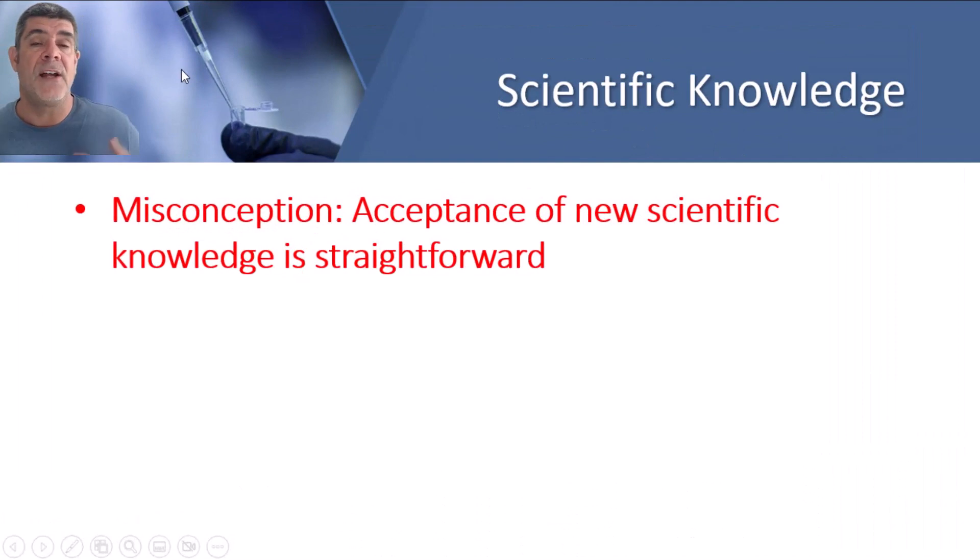A third area where we might talk about scientific misconceptions is the area of scientific knowledge. And a couple of these hopefully will suffice to get you an idea of some of these misconceptions. Acceptance of new scientific knowledge is straightforward. Well, no, briefly, it isn't. It's very difficult for new ideas to be accepted by the scientific community. Professional skepticism is a trait that's characteristic of science. Scientists also set the standards by which new information is incorporated as scientific knowledge. As an example, many theories that are mainstream today took a long time to become established in the scientific community.